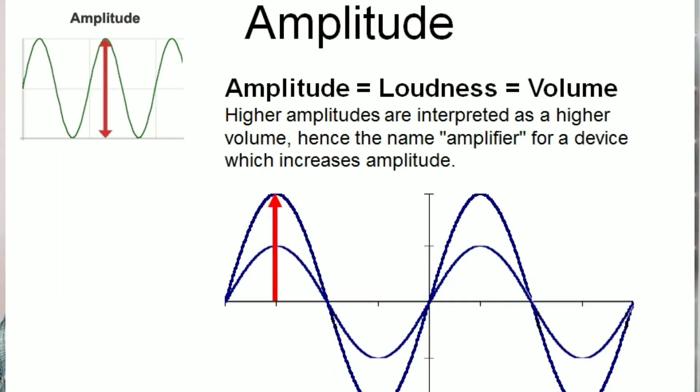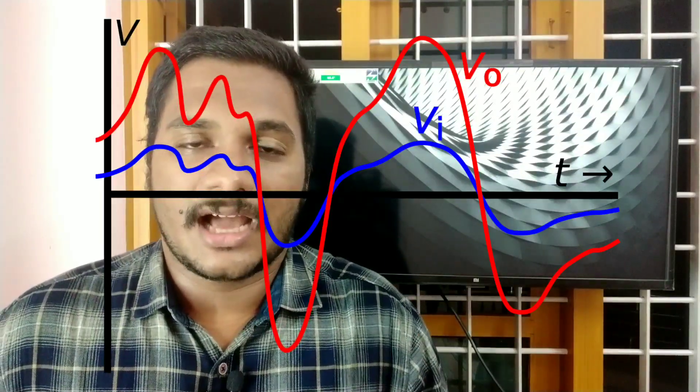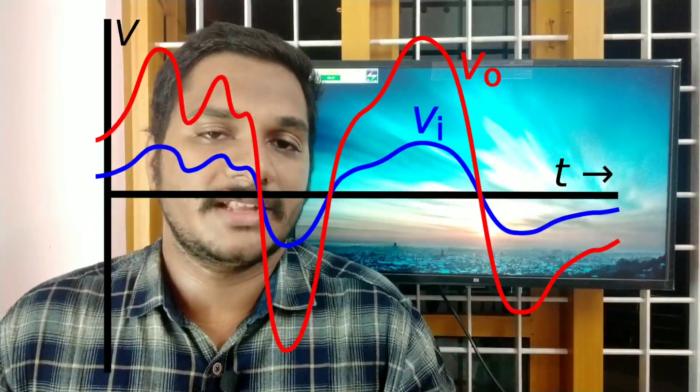Amplitude is the maximum displacement of particles. In the previous episode, we talked about the sound and the characteristics of this amplifier. We talked about the wave — it gives a crest or a trough. The amplitude gives a height that is higher. But the amplitude is not the same in every case.